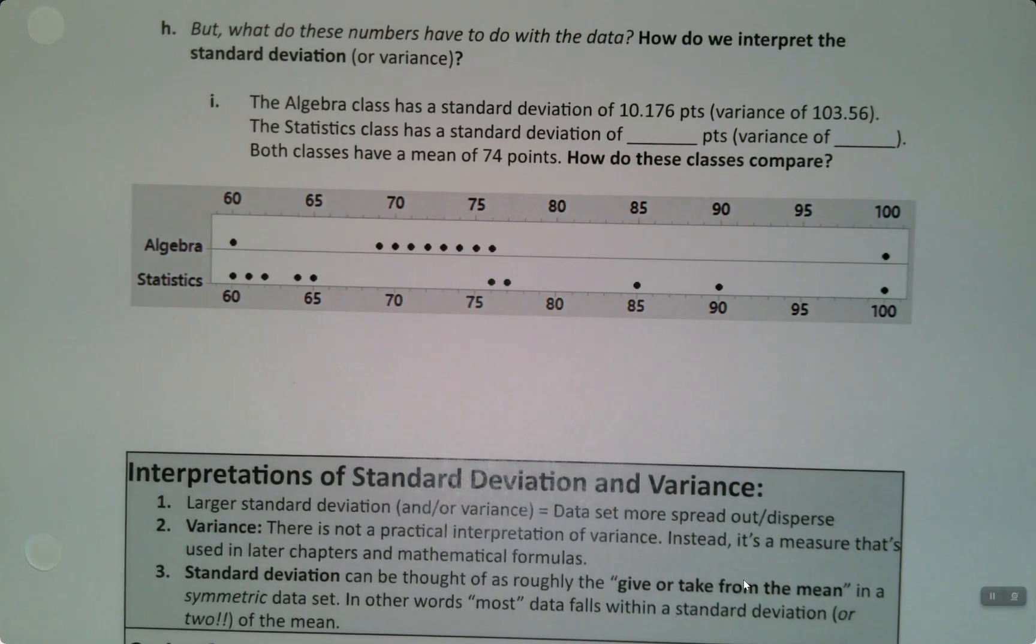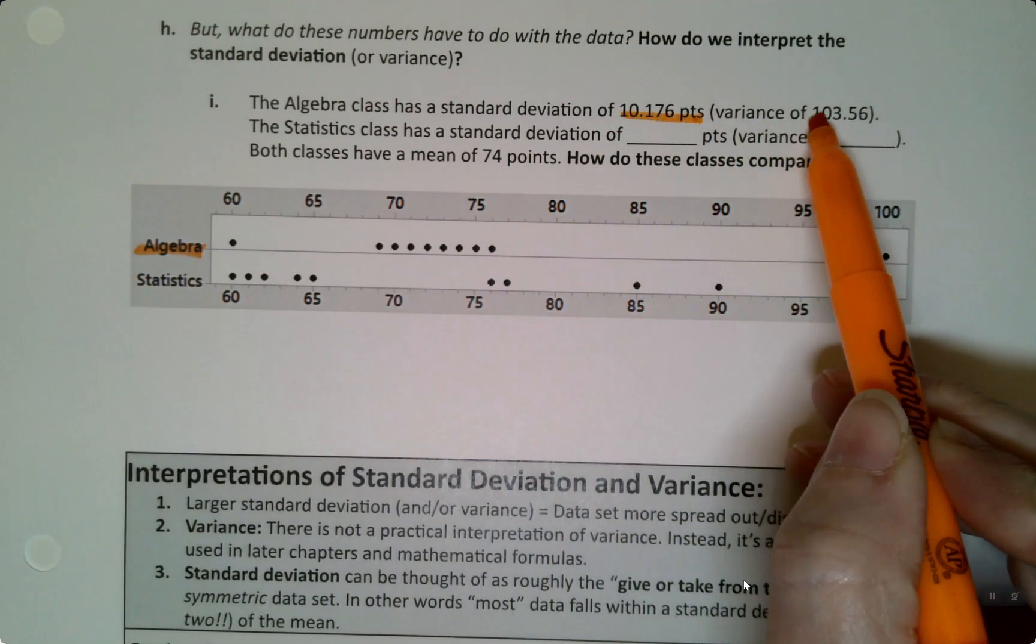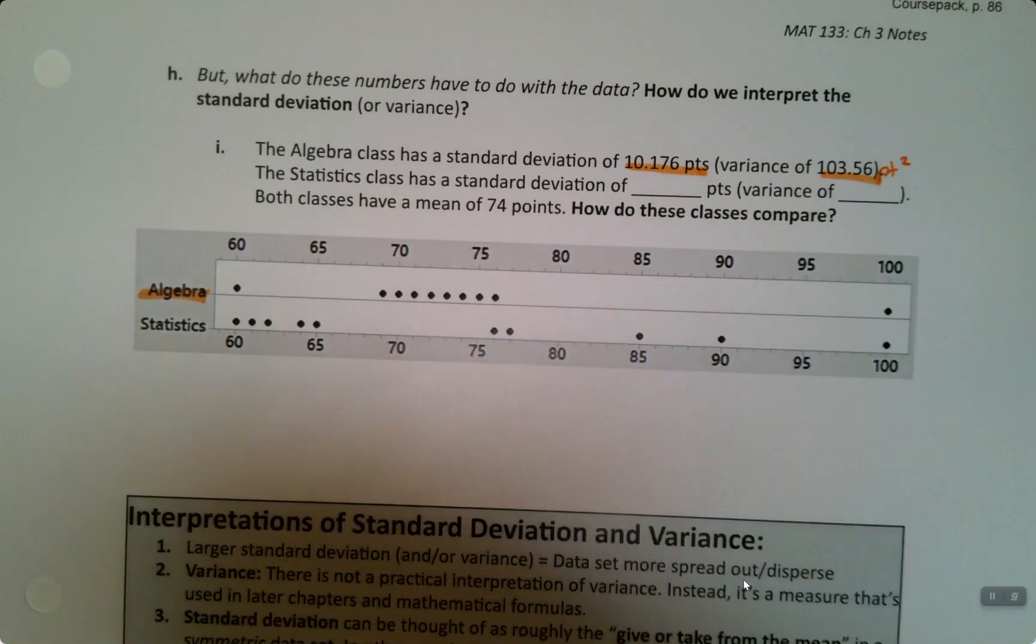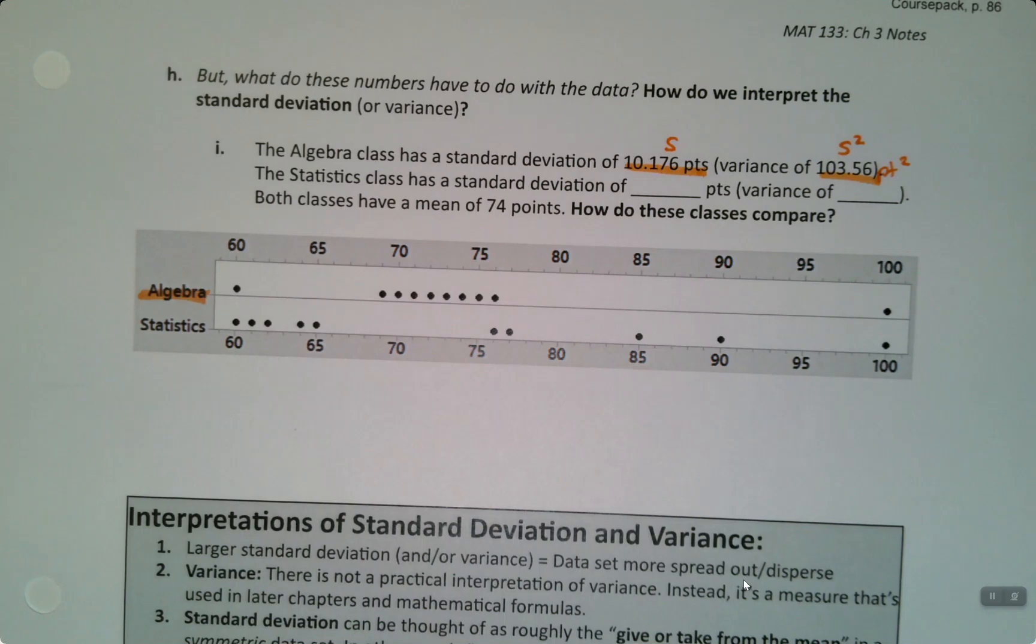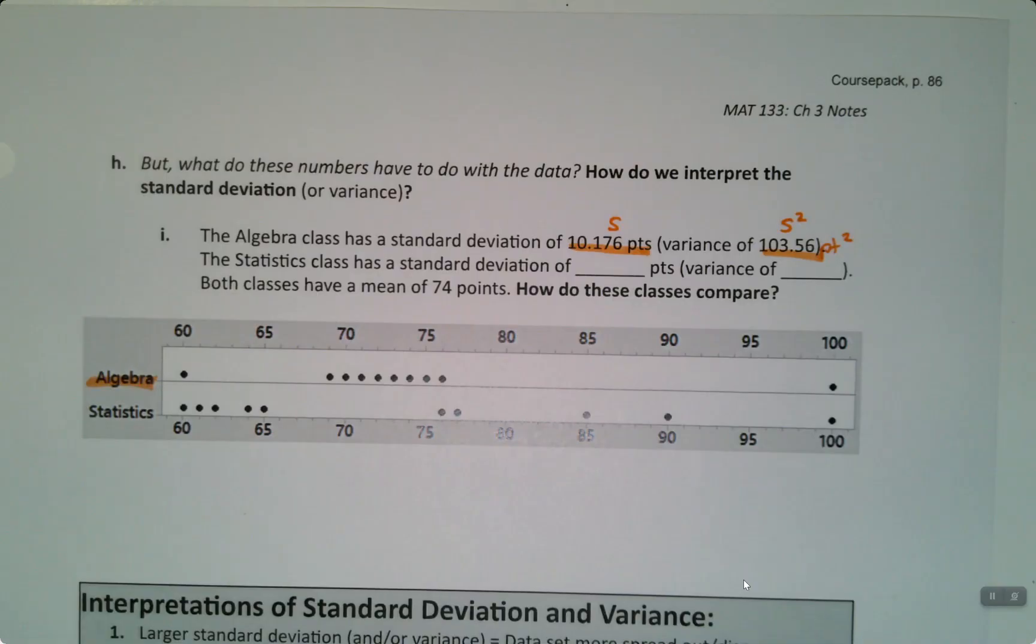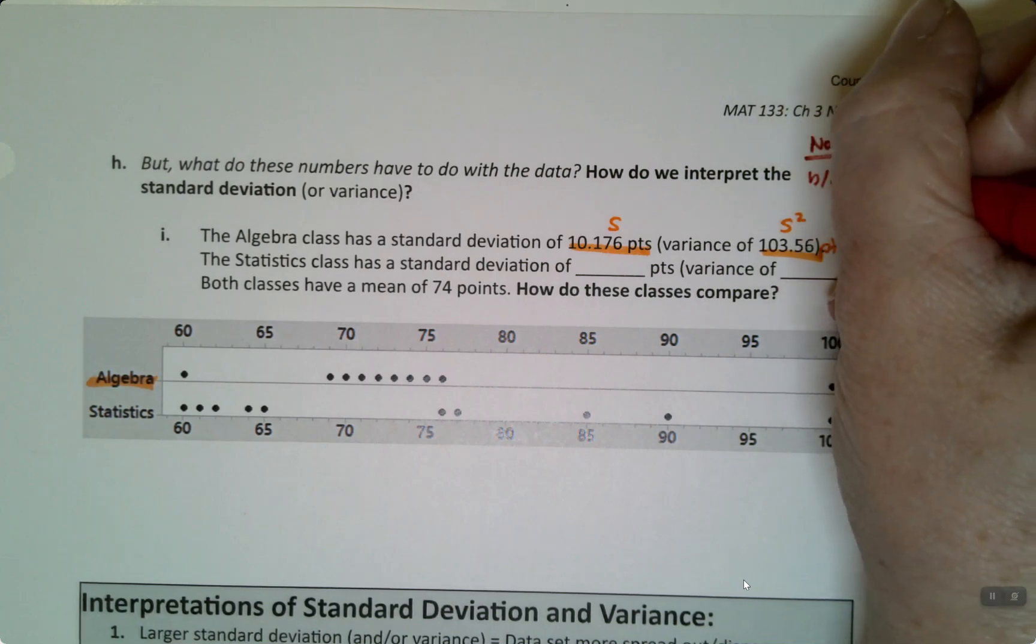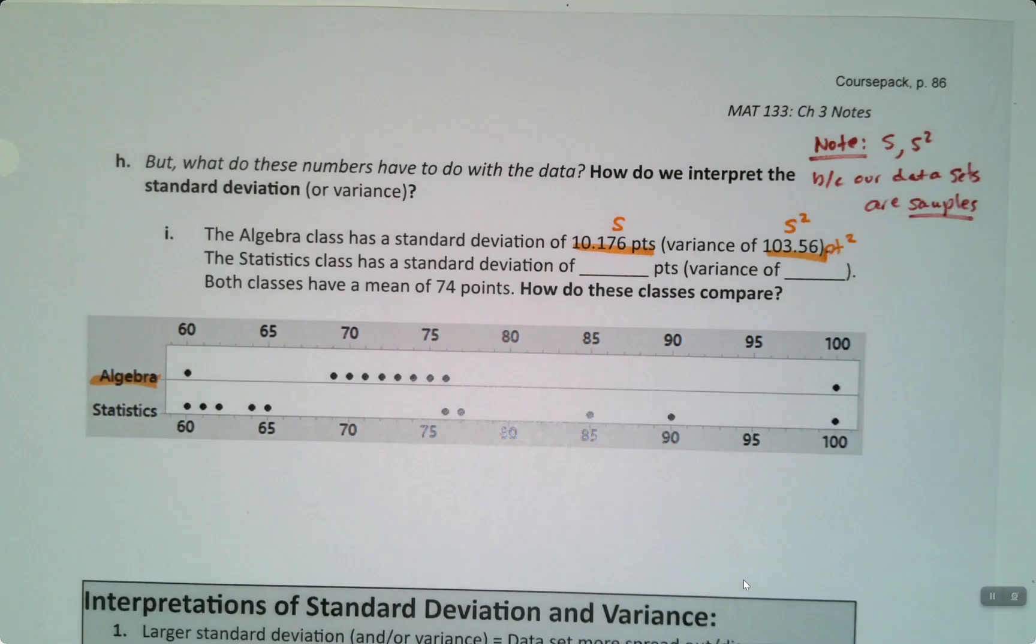So we have an algebra class. The algebra class has a standard deviation of 10.176 and a variance of 103.56. And I'm sorry, I should have put units on that just so you can see it, but it's points squared. This one is S. This is S squared. We would use the S values because these are samples. Right? So this was a sample of algebra students and a sample of statistics students. We're using S and S squared because our data sets are samples.